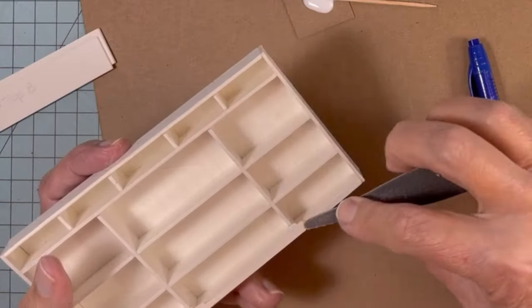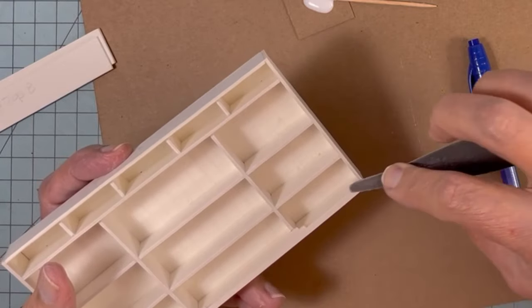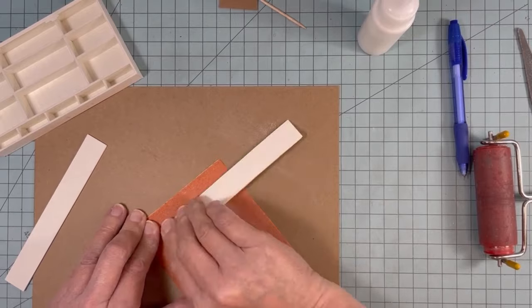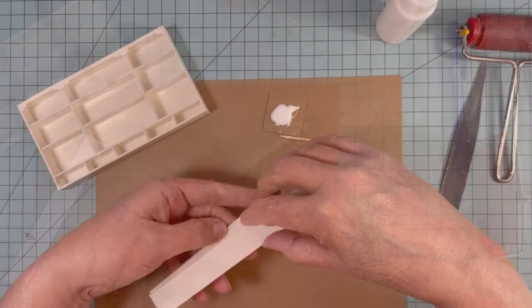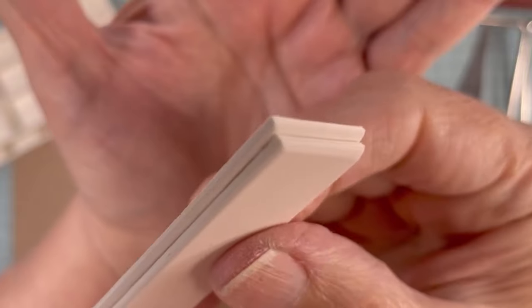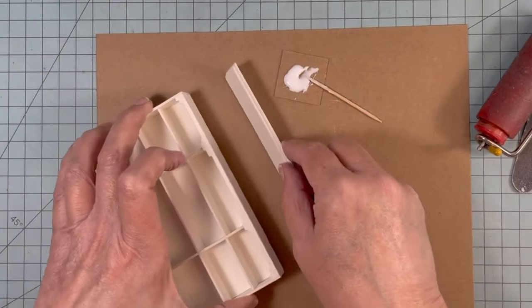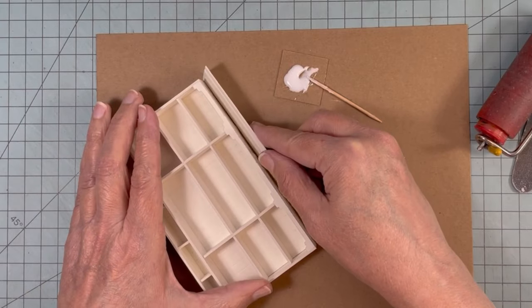Here I'm sanding to soften all of the edges. Sanding the next two pieces to have a bevel on the front and the sides. Top half of the unit is almost complete. I just need to glue this beveled piece on.